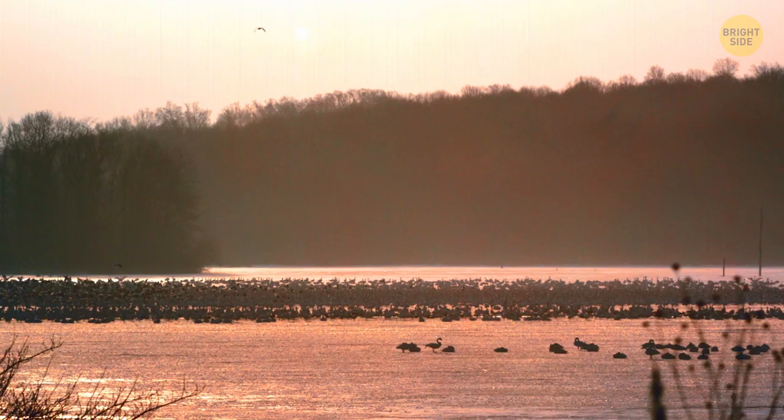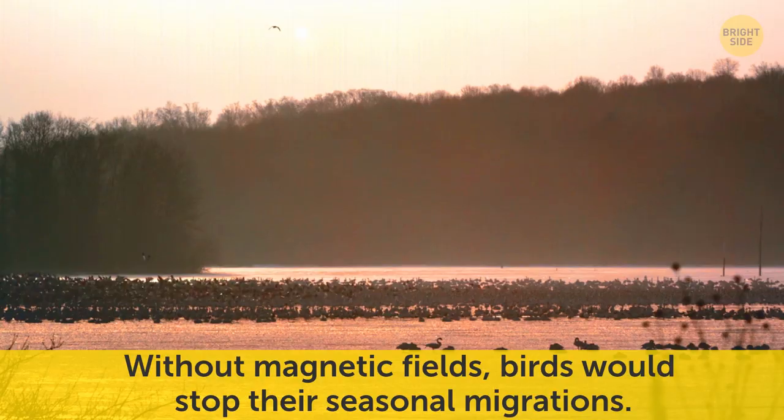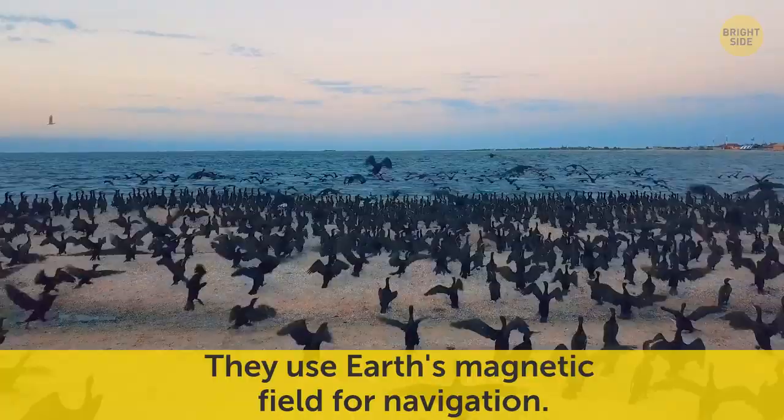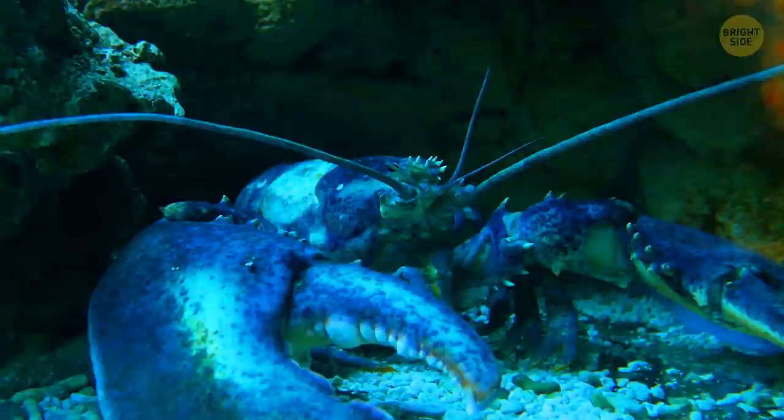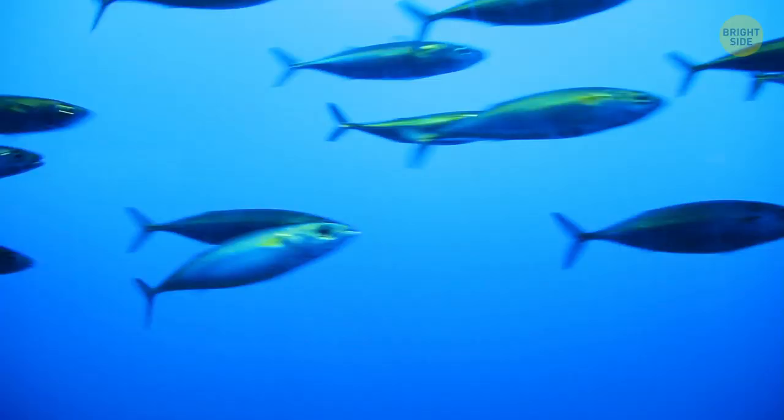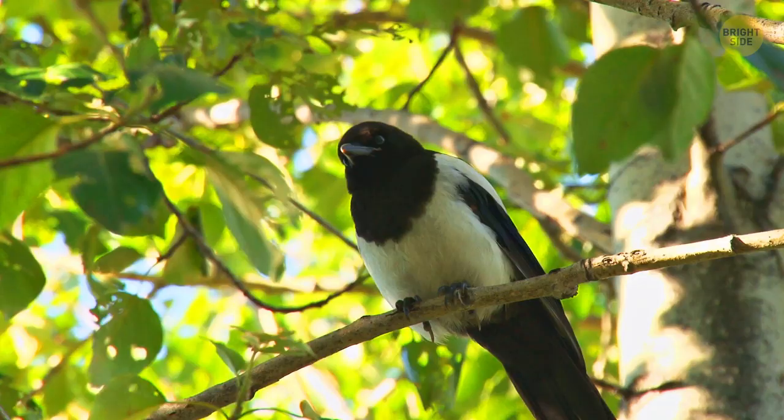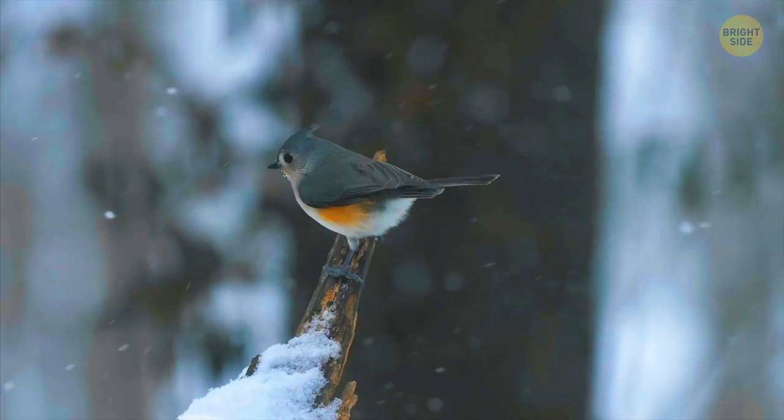Without magnetic fields, birds would stop their seasonal migrations. They use Earth's magnetic field for navigation, just like many other creatures like sea turtles, honeybees, lobsters, and some species of fish. So, let's say the magnetic field disappeared. In this case, migrating birds wouldn't know where to fly, and they might not survive the winter.